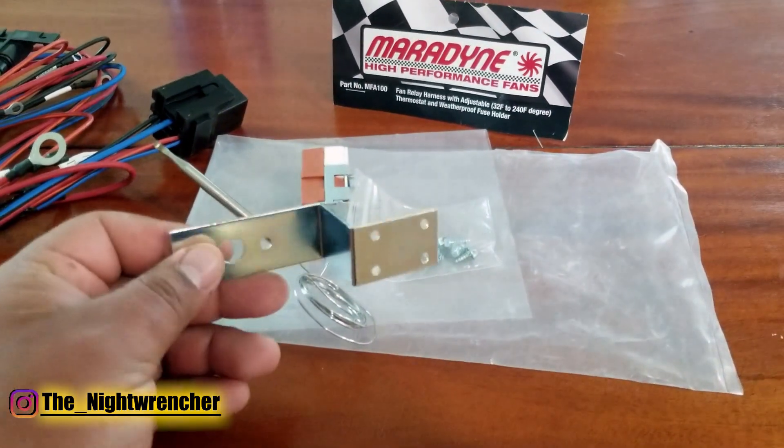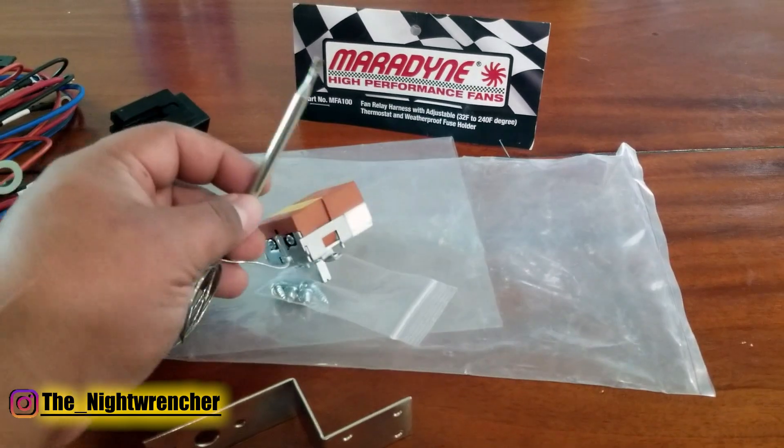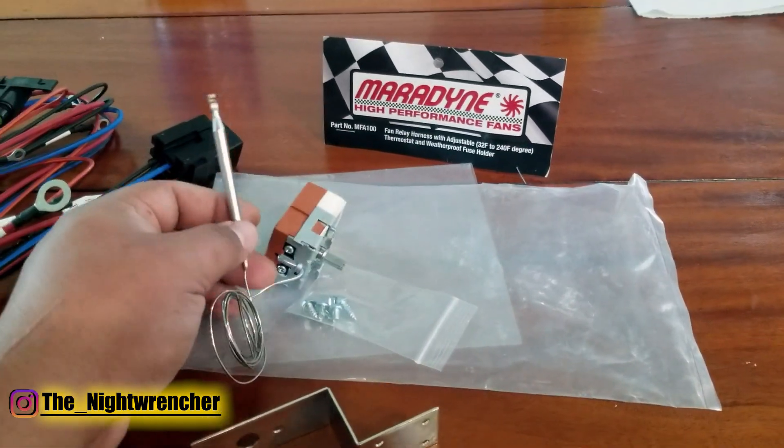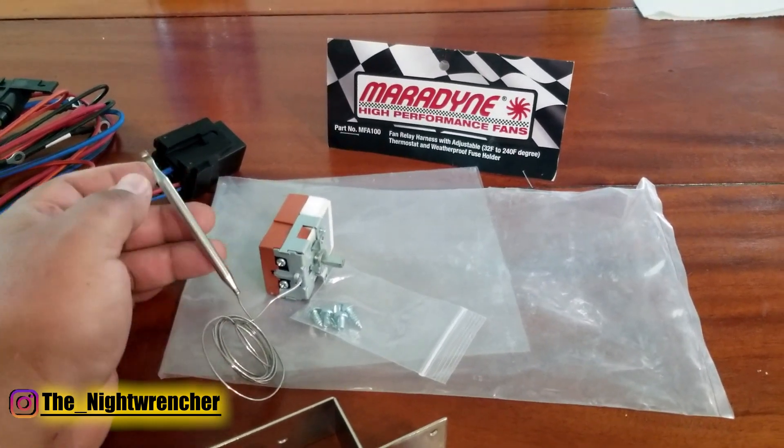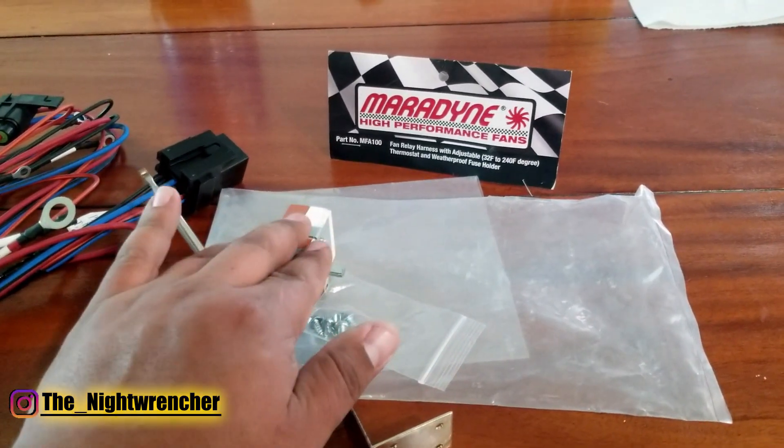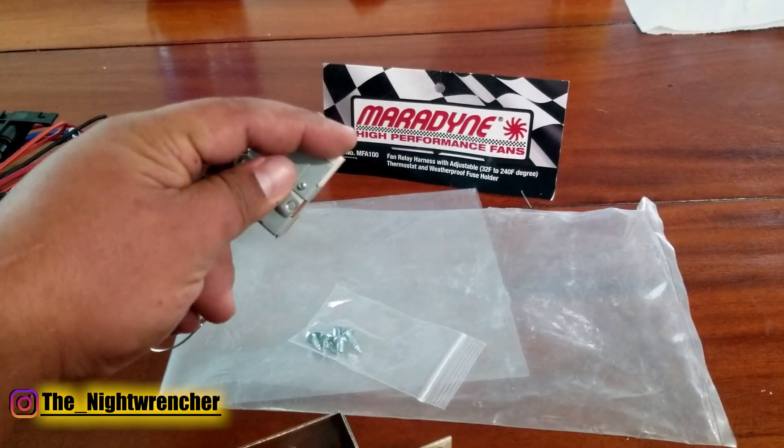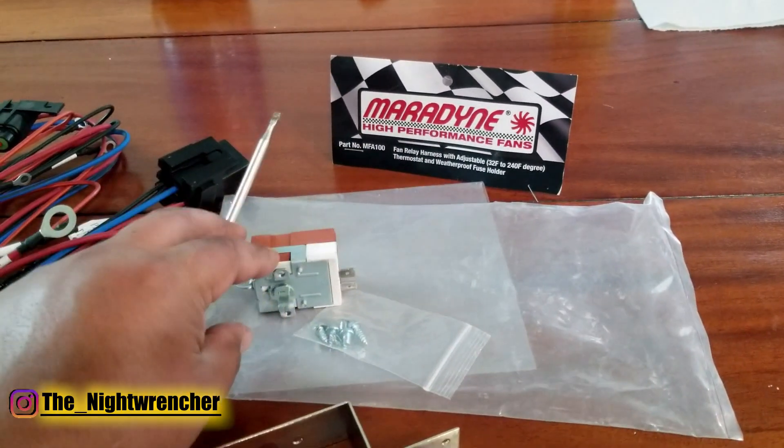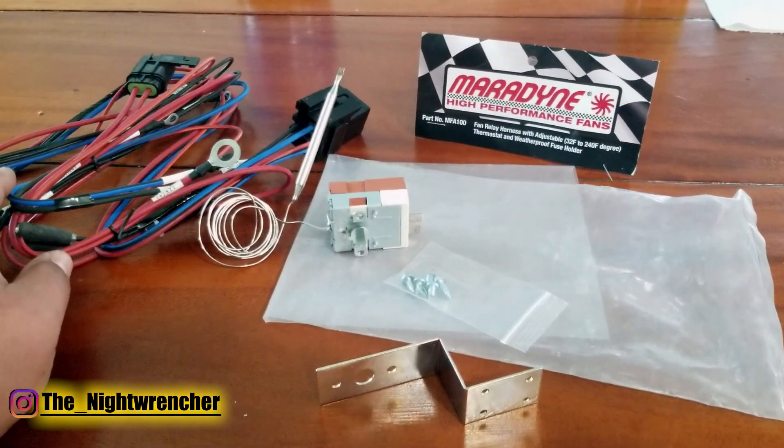The way this thing works is that after you get this mounted up on your core support or firewall, you're supposed to take this bulb and put it into the radiator. Once this senses the radiator temperature reach a certain temperature, this thing's going to send the signal to this little box and the thermostat box is going to close these two connections and either apply power or ground to the circuit.